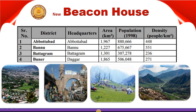The second district is Buner. Its headquarter is also in Buner. It has an area of 1,227 km², a population of 675,667, and a density of 551 people per km². The third district is Battagram. Its headquarter is also in Battagram. Its area is 1,301 km², its population is 307,278 people, and the density is 236 people per km².